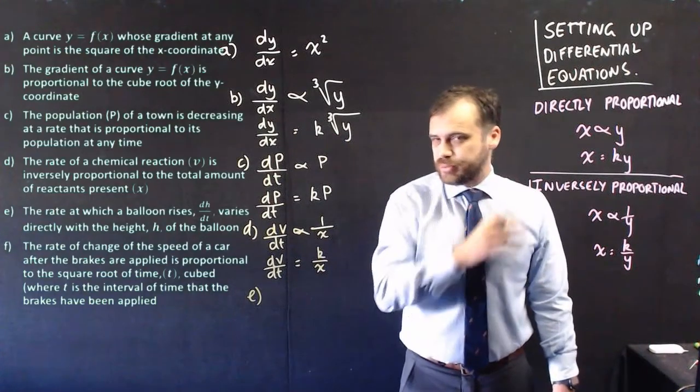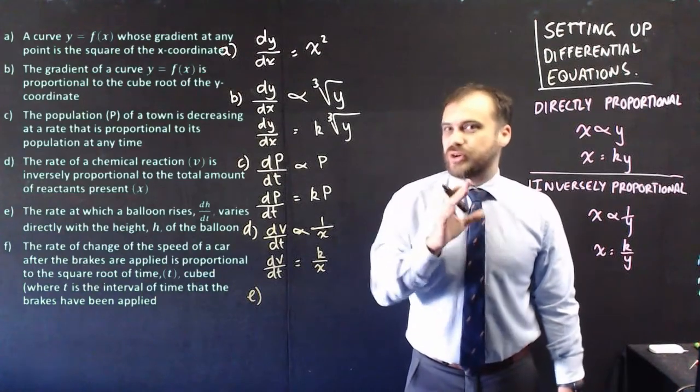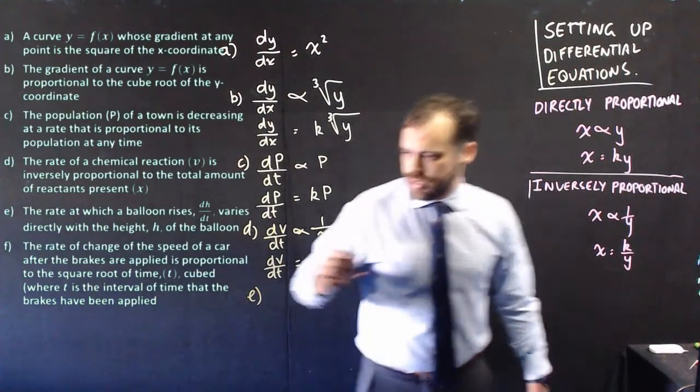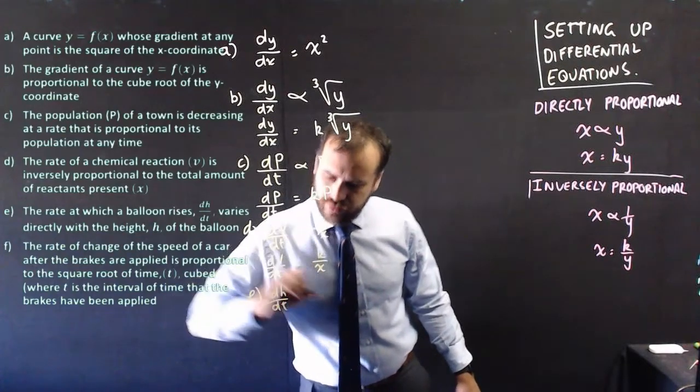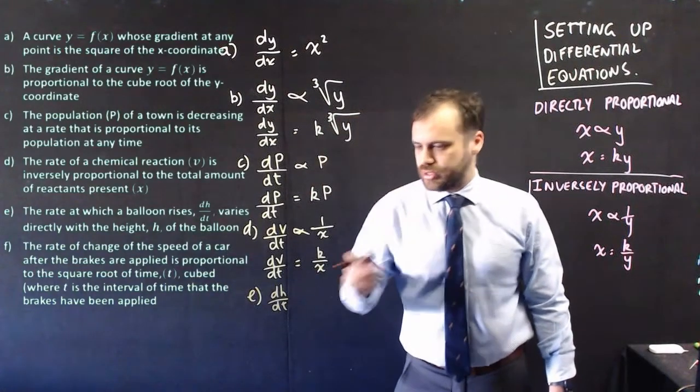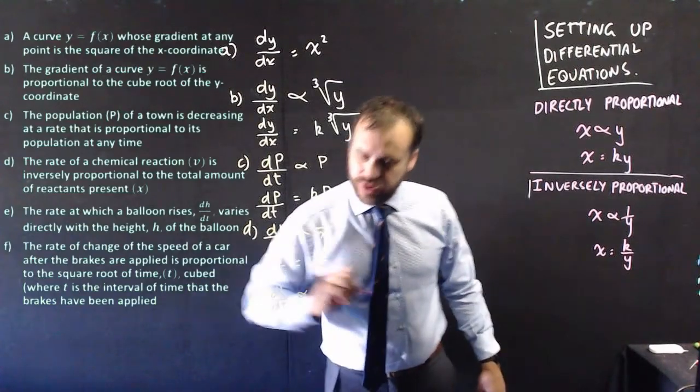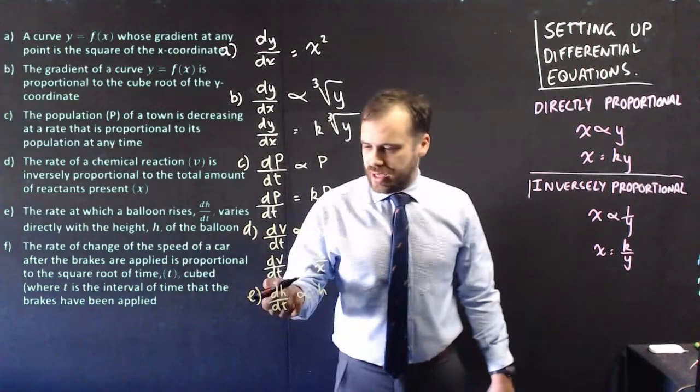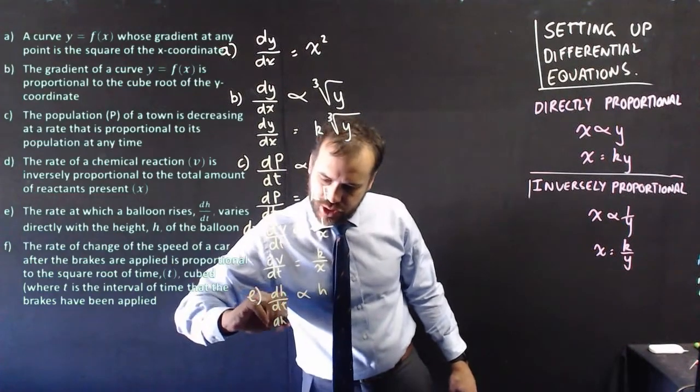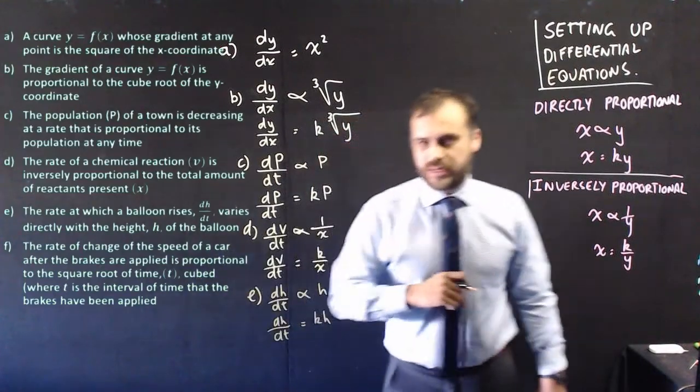So the rate at which a balloon rises, what does it do? It varies directly with the height h of the balloon. So the rate at which the height of the balloon changes. All right, so height with respect to time is directly proportional to the height of the balloon itself. And we can, of course, write this as an equation. dh dt equals k h.